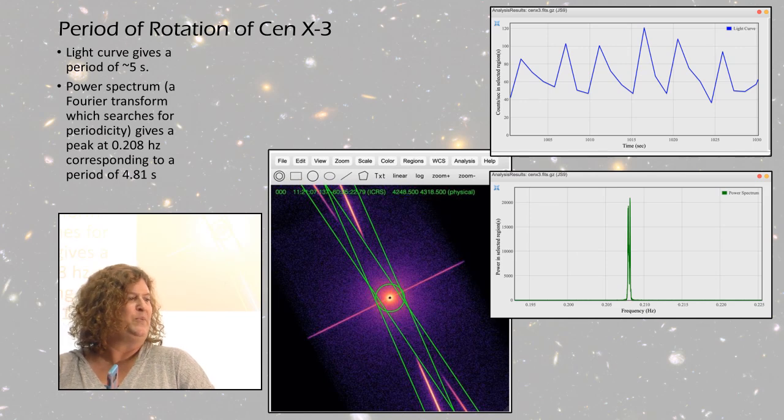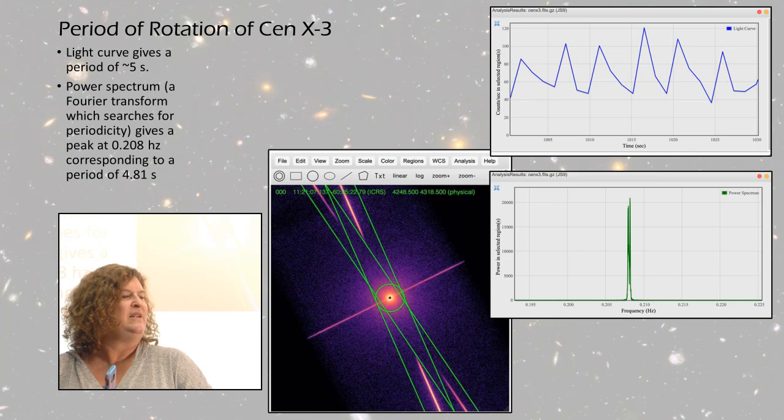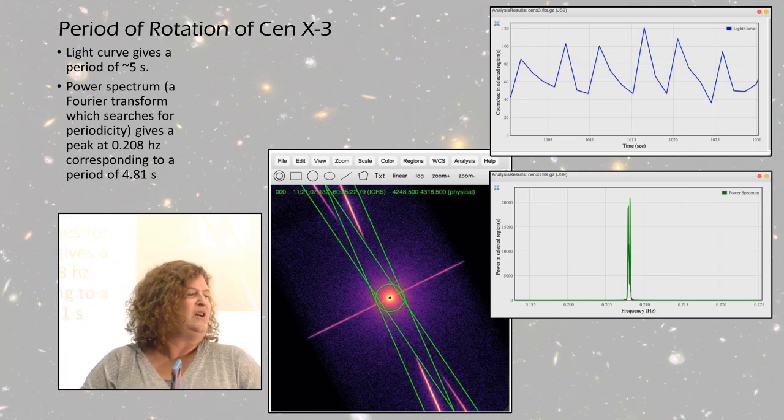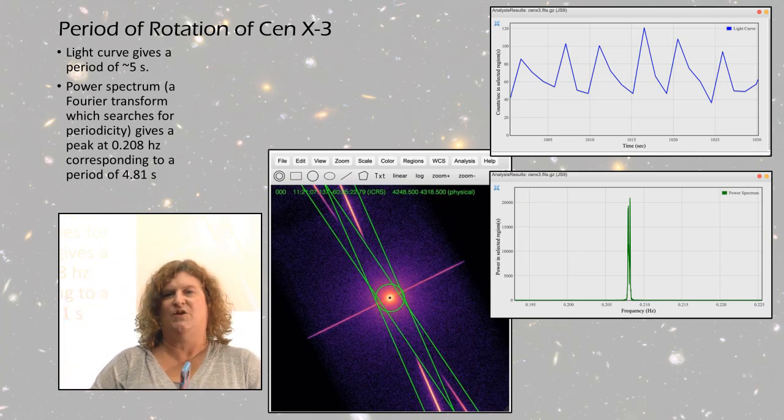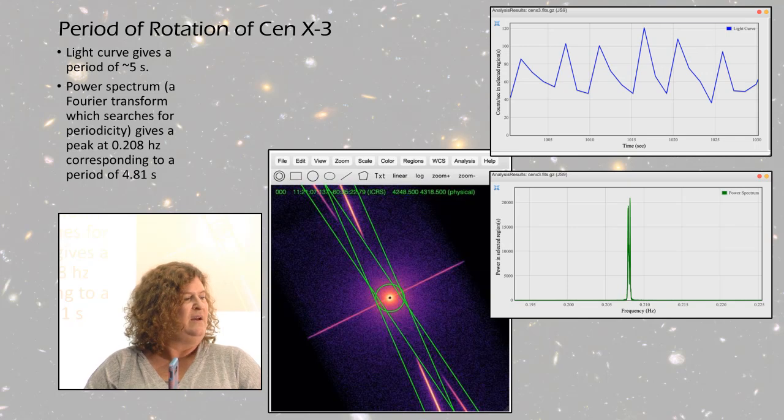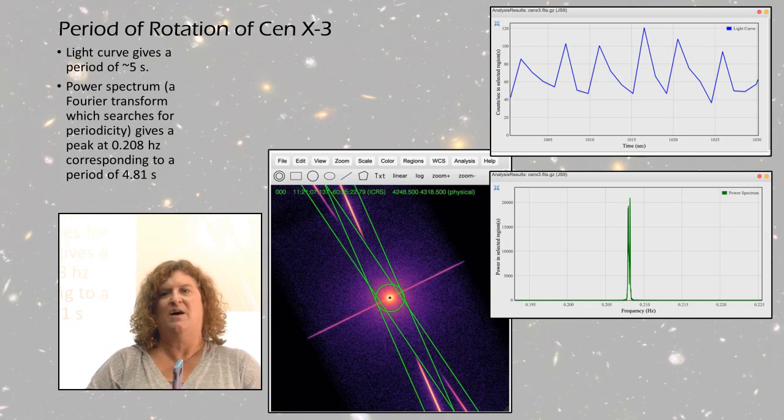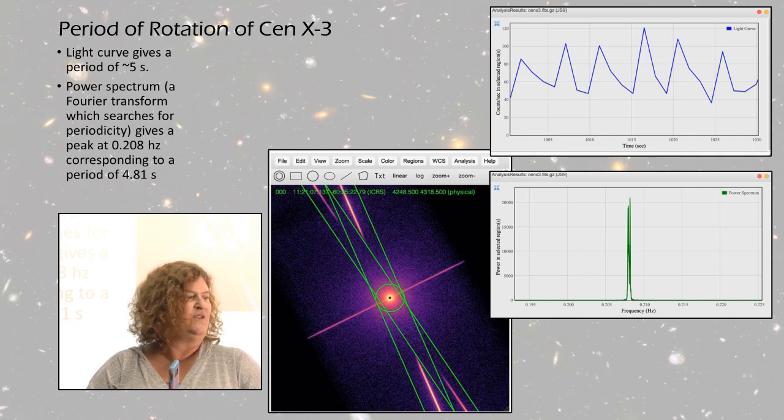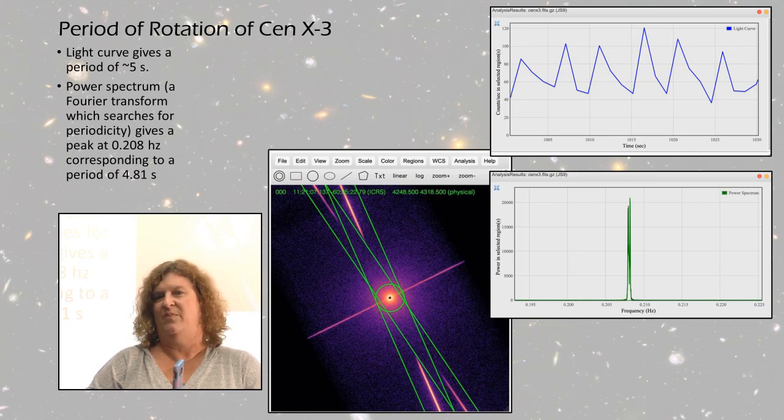To get a little bit more precision, you can run a power spectrum in JS9, which is a Fourier transform. It looks for any periodicity in the data. You see a big peak at 0.208 hertz. So if you do one divided by 0.208 hertz, it gives you a period of about 4.81 seconds, which is more precise than the five seconds from the light curve.